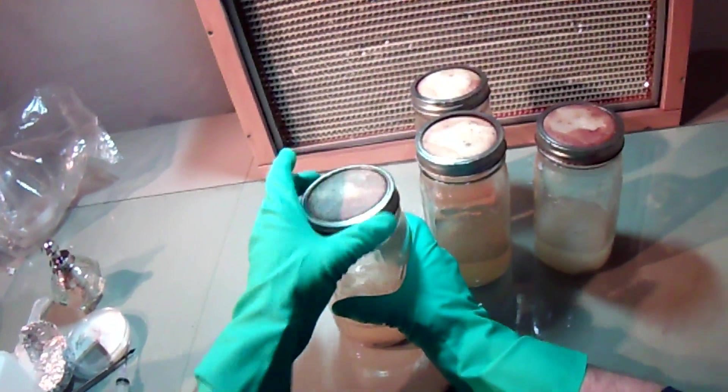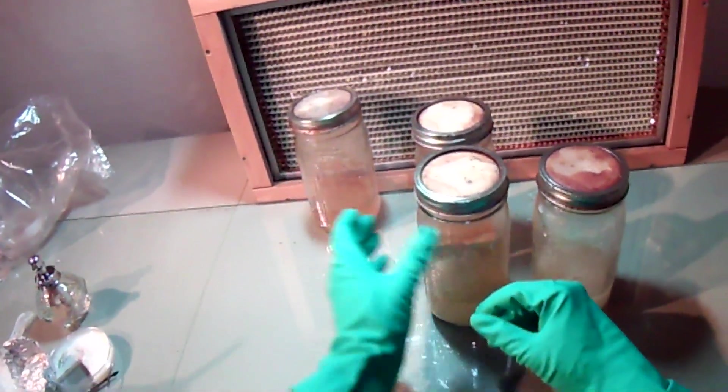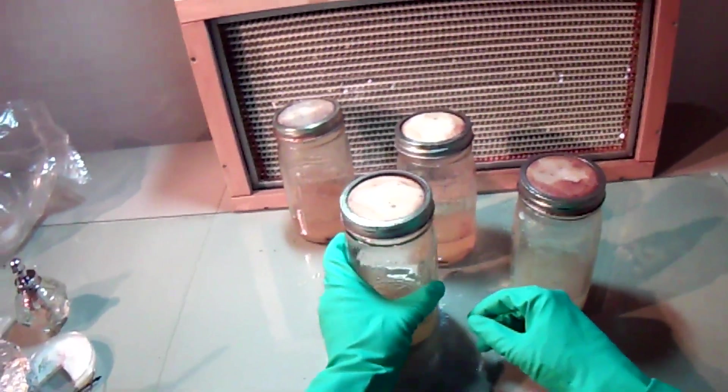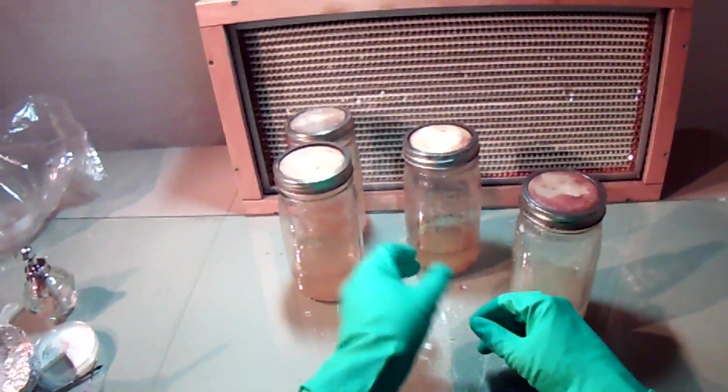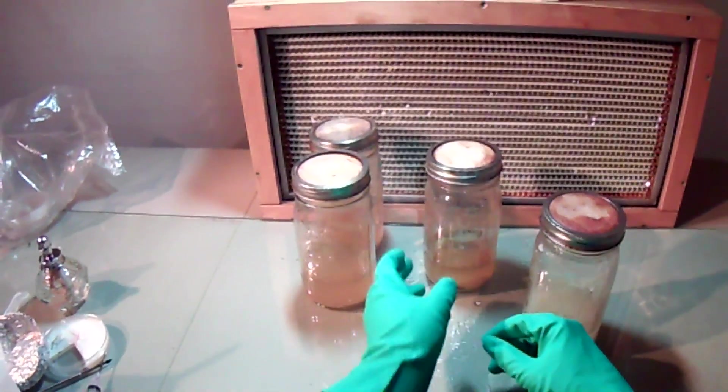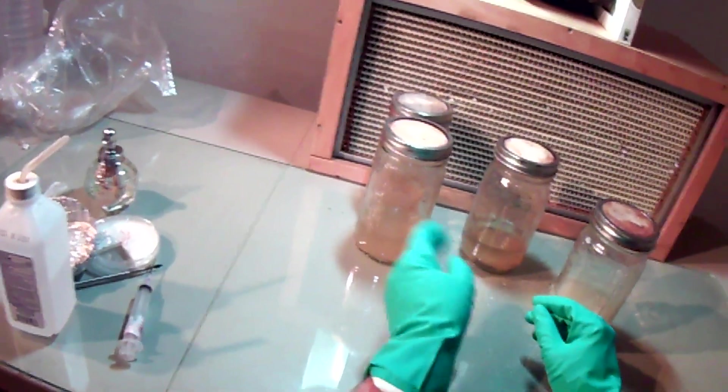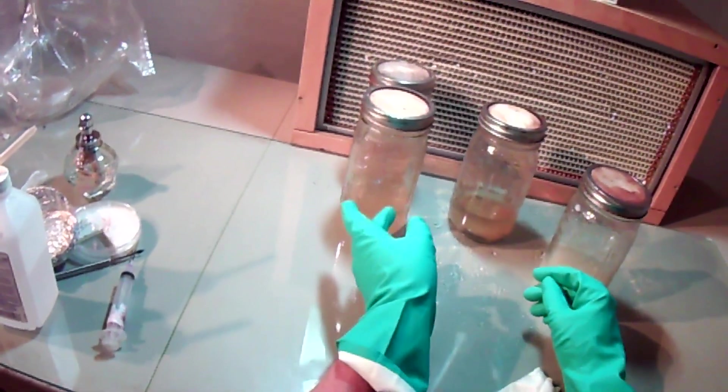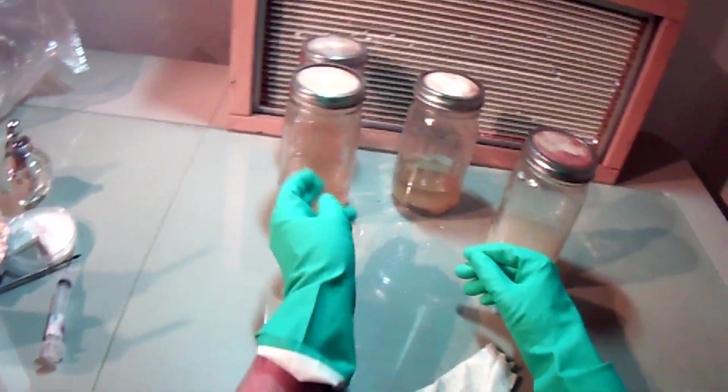If somehow you forget which one's which, you can always remember clear and cloudy. Hopefully you're labeling things too. Keep the two that you're not going to inoculate up as close and in line together to the flow hood. You always want to keep things about 2 or 3 inches from the margin because you can still have some air swirl in. Right about there is the perfect safe zone.